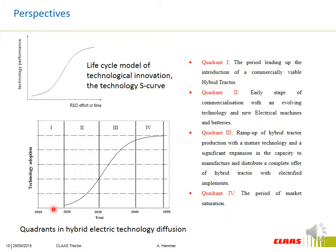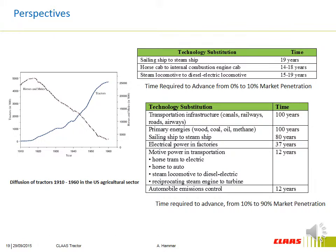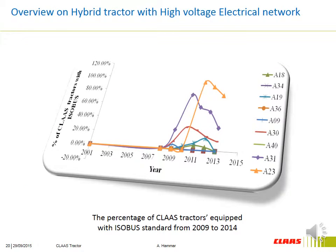The first step is introduction and innovation. The second step is evolution of electric technology of components and systems. The third step is the growth of the market of hybrid tractors gradually. And finally, hybrid tractors with onboard high voltage reach market saturation. History says that the penetration of tractors in the US has taken 15 years for the different S-curve steps. For CLAAS, the recent example is the diffusion of the ISOBUS system in tractors and implements. It is our reference to draw our diffusion curve in the case of electrical technology evolution.